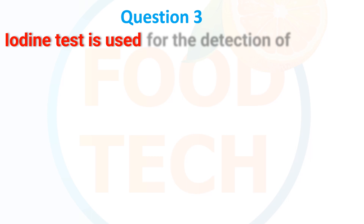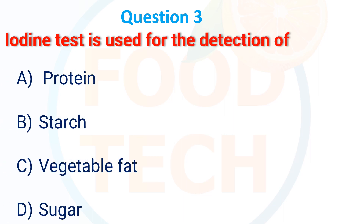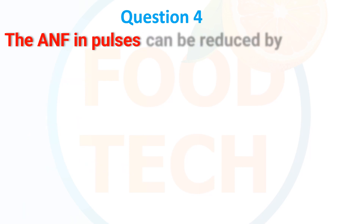Iodine test is used for detection of: A. Protein, B. Starch, C. Vegetable fat, D. Sugar. The answer is B. Starch.